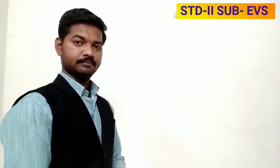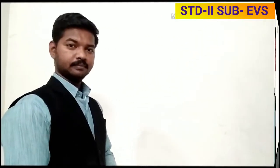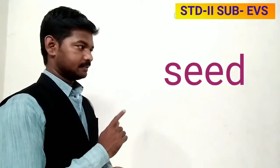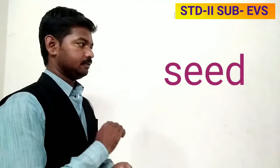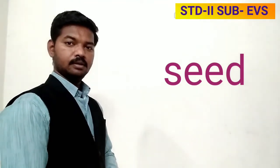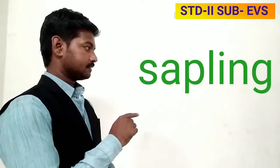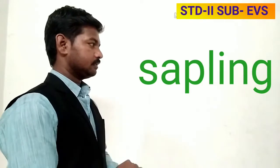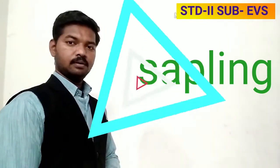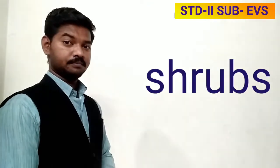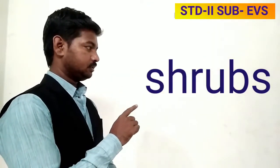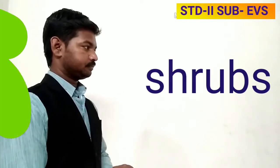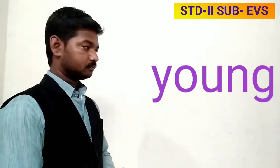Now I'll give you new words that you have to copy in your notebook. Number one: seed — S-E-E-D, seed. Number two: sapling — S-A-P-L-L-I-N-G, sapling. Number three: shrubs — S-H-R-U-B-S, shrubs.